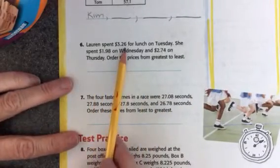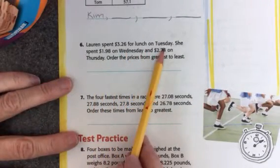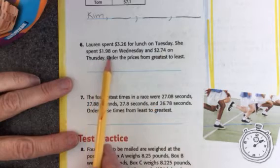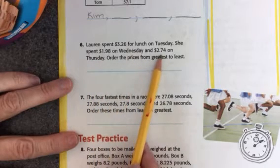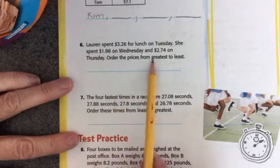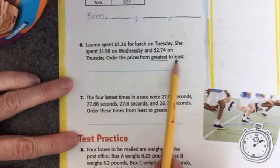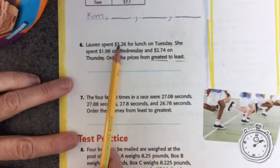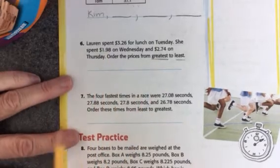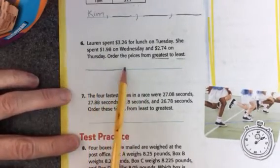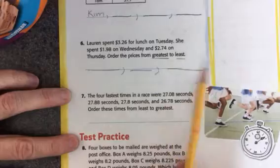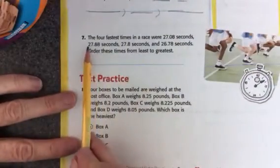Lauren spent $3.26 for lunch on Tuesday. She spent $1.98 on Wednesday and $2.74 on Thursday. Order the prices from greatest to least. So go ahead and look at that one's digit and figure out which number is the greatest and write it down and so on until you have all three numbers written down.